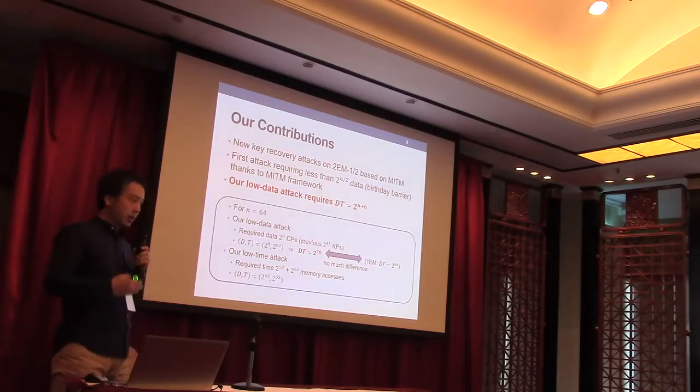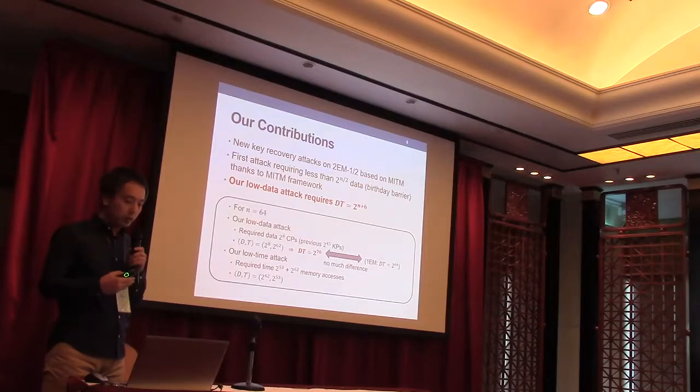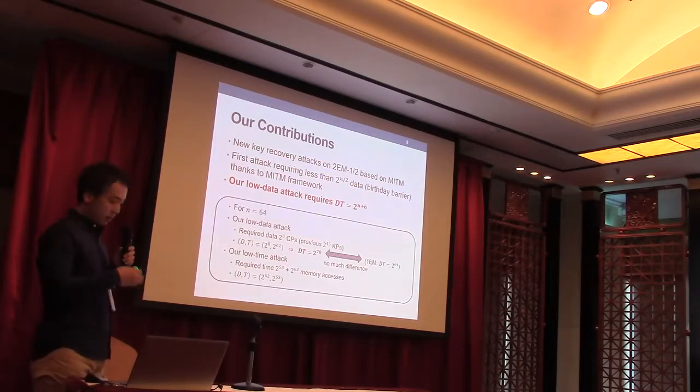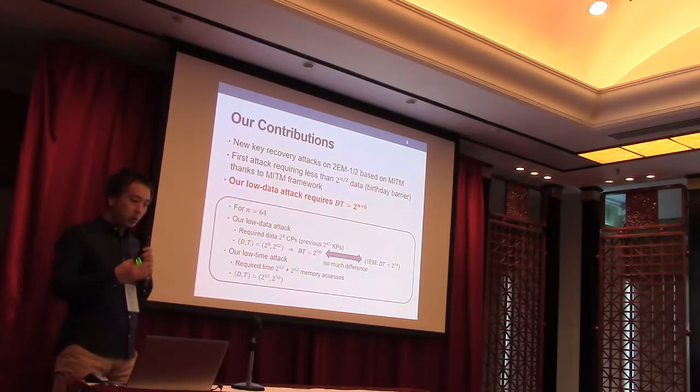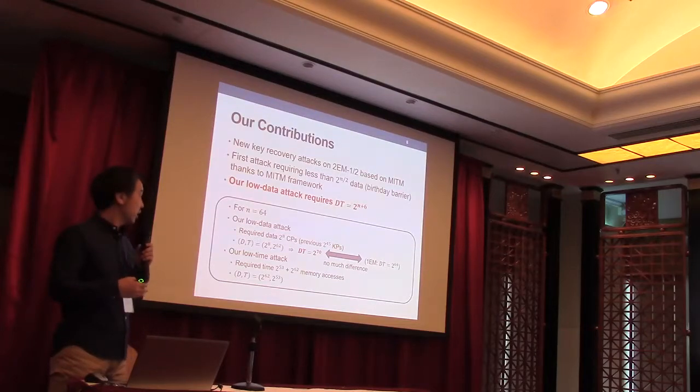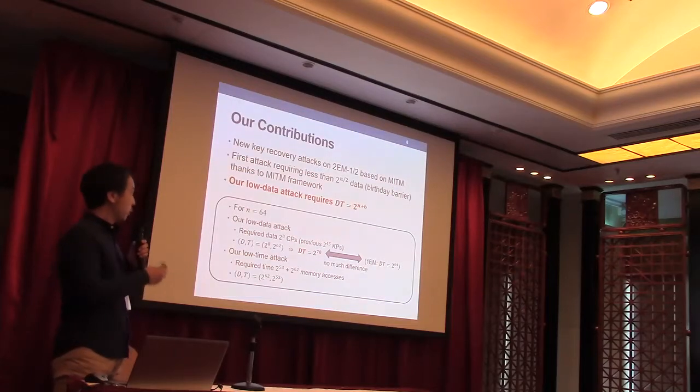So the attack for 1EM requires DT equals 2 to the n. So this bound is close to DT equals 2 to the n. It implies that 2EM1 and 2EM2 are not much more secure than 1EM at this point.